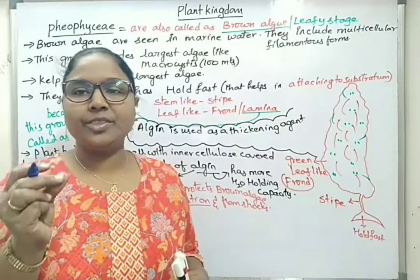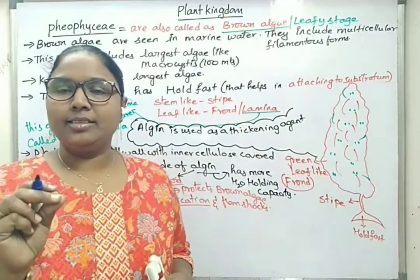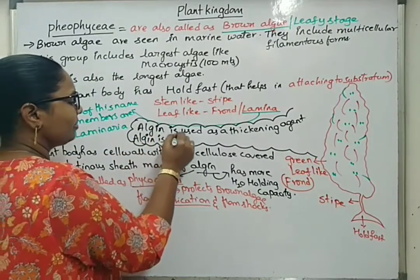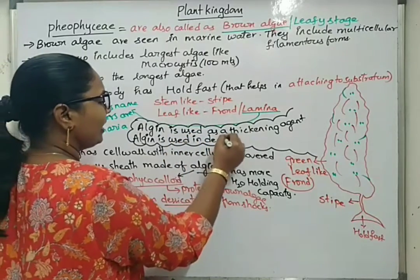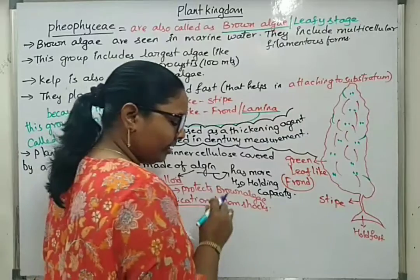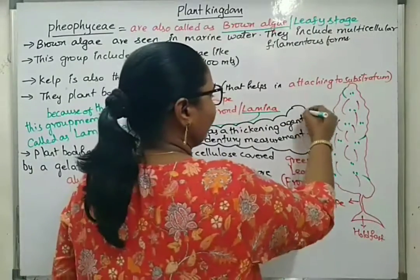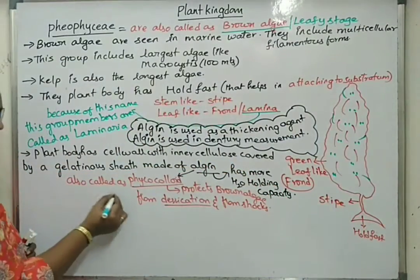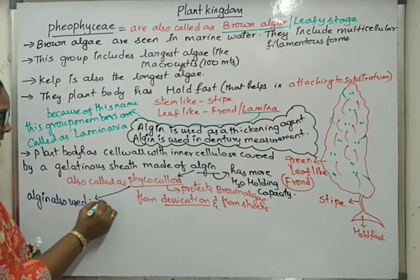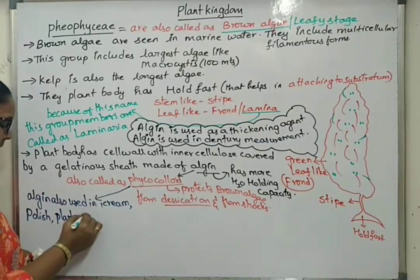Algin is used while fixing new artificial teeth — during dental measurements, algin is used at that time. Algin is also used in the manufacturing of ice creams, polishes, and plastics.